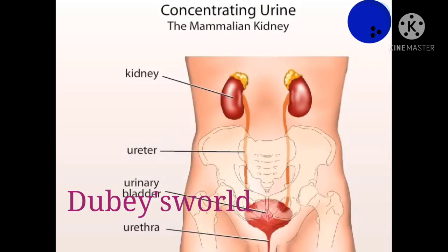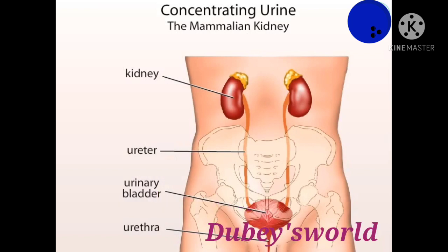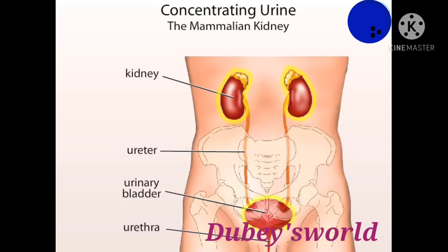The major excretory organ of mammals is the kidney. Humans have two kidneys located in the upper rear region of the abdominal cavity. The urine they produce is conducted to the urinary bladder through the ureters. The urethra drains the bladder.